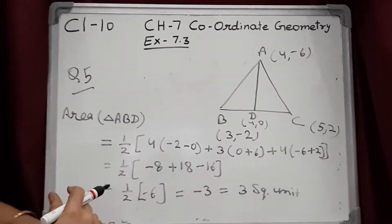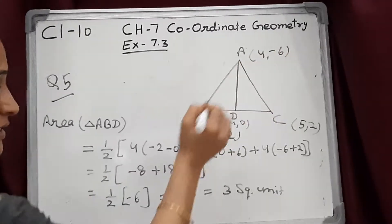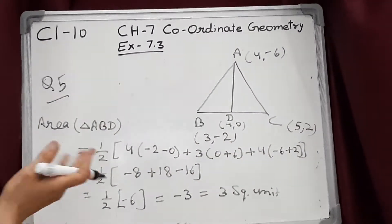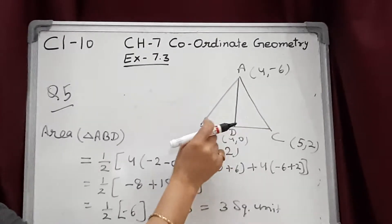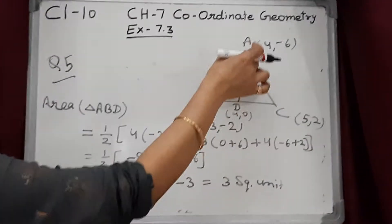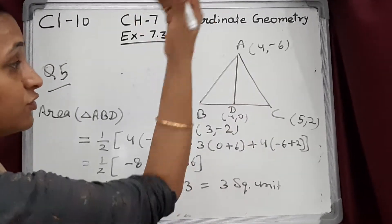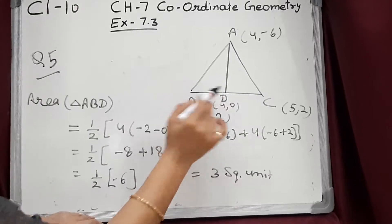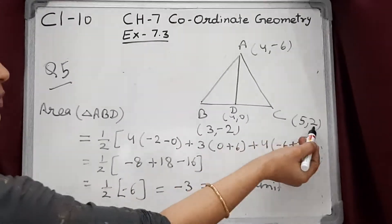We have proved this theorem before. Here I have to find the two parts of the area and prove they are equal. Suppose A is (4, −6), B is (3, −2), C is (5, 2). The median AD goes from vertex A to the midpoint D of the opposite side BC. So D is the midpoint of BC. We can find D directly: x-coordinate = (3 + 5)/2 = 8/2 = 4, and y-coordinate = (−2 + 2)/2 = 0/2 = 0. So D = (4, 0).